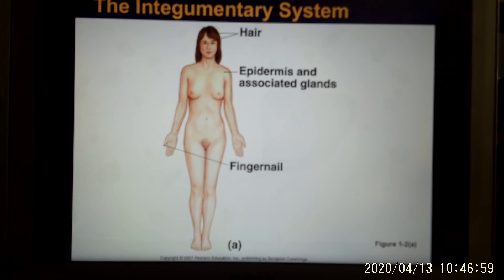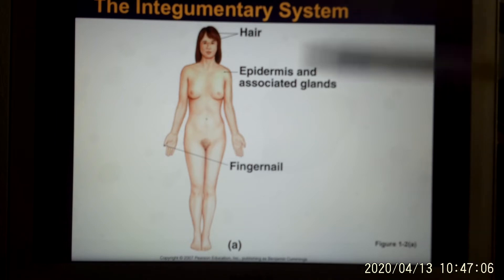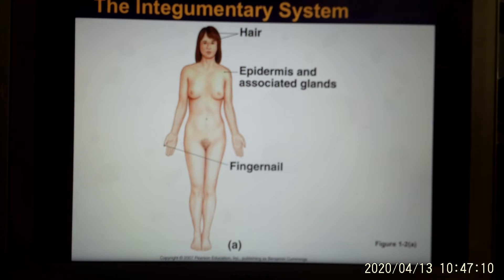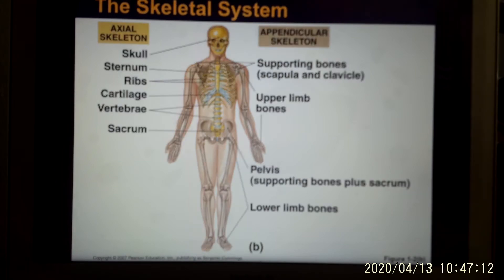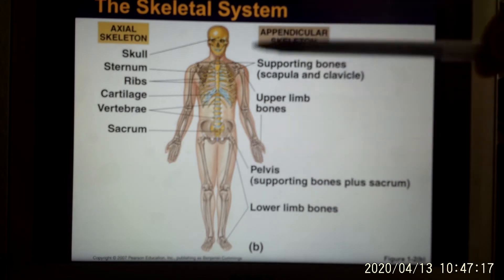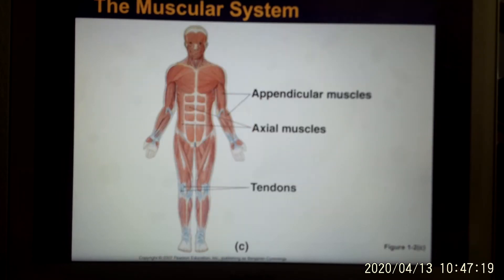The integumentary system is your skin — skin is a big organ, the biggest organ you have in your body. It covers your body and provides protection. The skeletal system is your bones, and it works together with the muscular system. The skeletal system and muscular system work hand in hand to create movement.